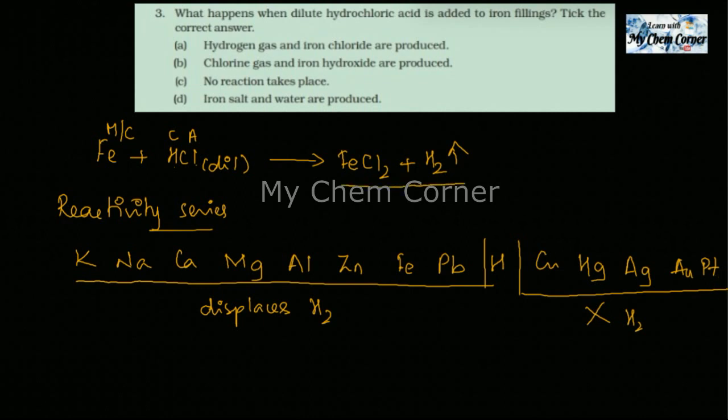Which option is it? It is option number A, where hydrogen gas and iron chloride are produced. The other options are not valid because chlorine gas is not produced at all. No reaction takes place cannot be true because Fe is present much before hydrogen in the reactivity series, so reaction has to take place. Iron salt and water - in this case water will not be produced because we don't have oxygen at all. Option A is the only answer.